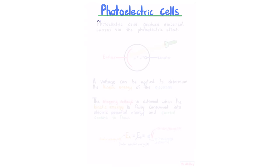Photoelectric cells. Photoelectric cells produce electrical current via the photoelectric effect. The cells consist of an emitter, upon which incident light ejects electrons, which are collected by the collector.